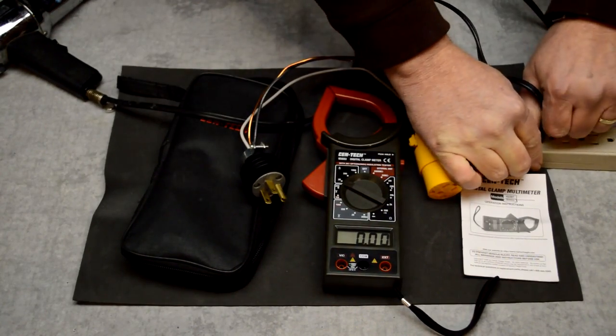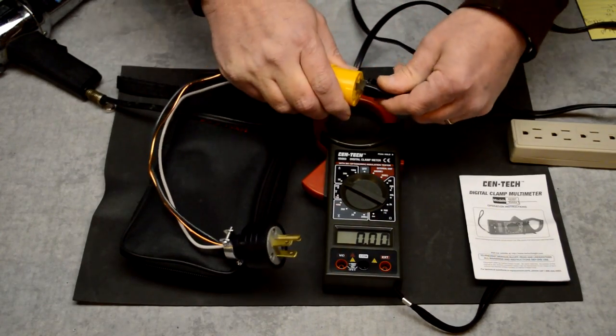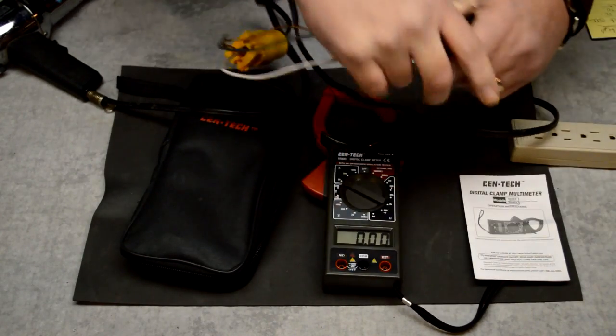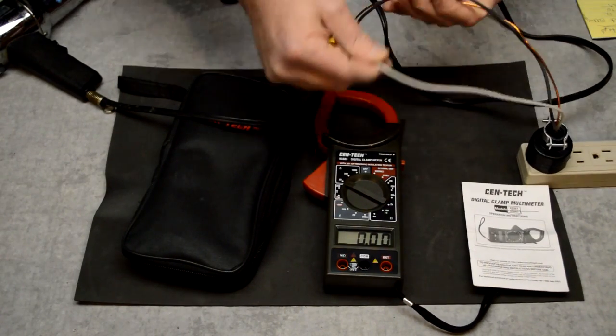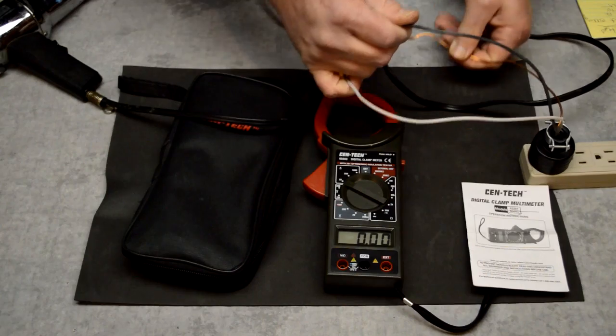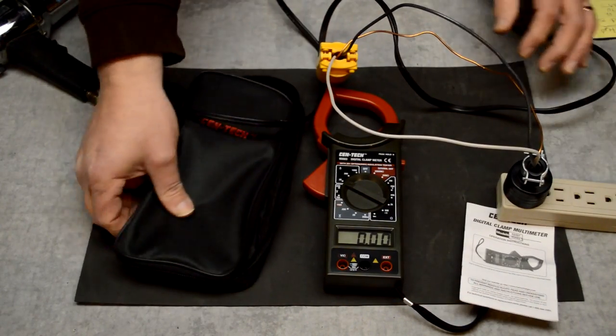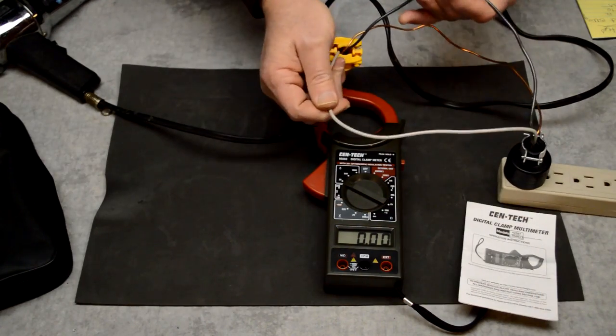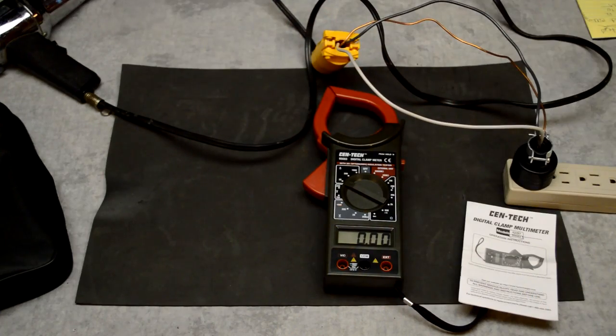So what we're going to do with this tester is go ahead and unplug our heat gun. We're going to plug it into this adapter that I made, and then plug that adapter into our power strip. Now we can go ahead and pull the hot, neutral, and ground wires apart. And it's best to keep the wires away from each other as much as possible. We're going to pick the white wire to test here.